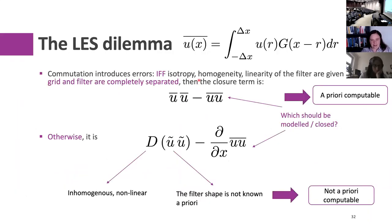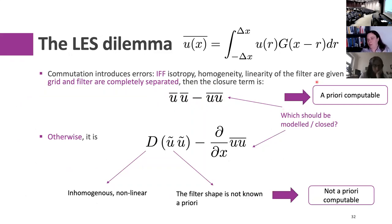This leads to what I call the LES dilemma. The textbook tells you the unknown closure term is this rather innocent-looking term τ = UU_filtered - U_filtered·U_filtered. If you know this filter and have a DNS database, you can compute it a priori. However, this is only the true closure term if everything is isotropic, homogeneous, the filter is linear, the grid and filter are completely separated, and boundary conditions are neglected. Only then is this the true closure term.